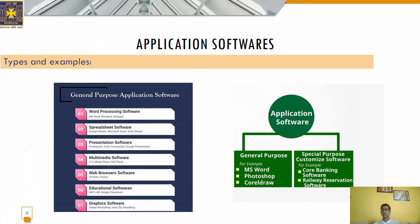Based on purpose or necessity, we can categorize application software into two basic categories. The first one is the general purpose application software and the other one is the special purpose application software.